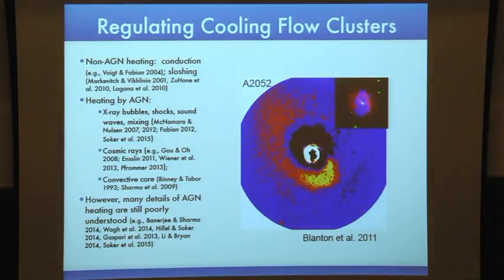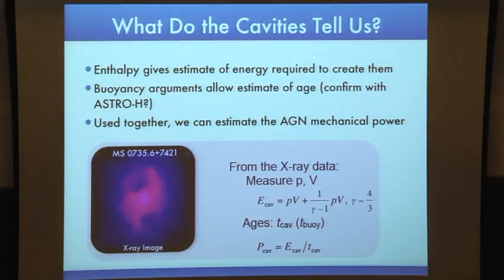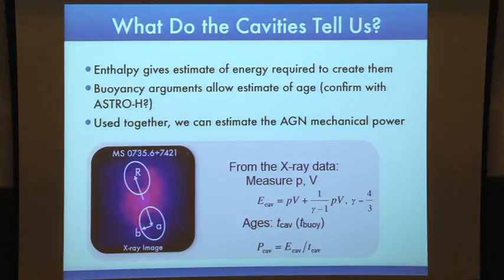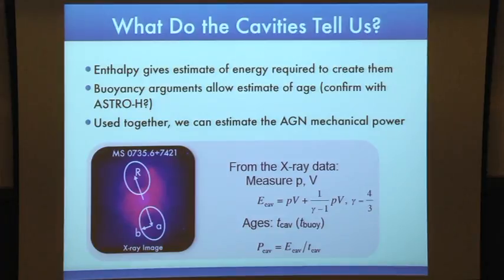From the X-ray data with Chandra, using nearby systems, we can measure cavities. From the X-ray image, we measure the cavity by eye, measure the distance from the center of the cluster to the present location, and measure the cavity sizes. Having this, we calculate the volume, and by fitting the data with a one-temperature plasma plus galactic absorption, we get the density. Assuming the cavities are in pressure equilibrium with the ICM, we measure the pressures, calculate the cavity enthalpy — giving the energy required to create them — and then calculate the cavity power.